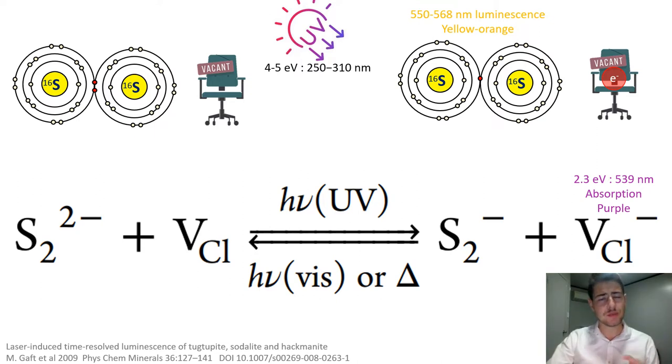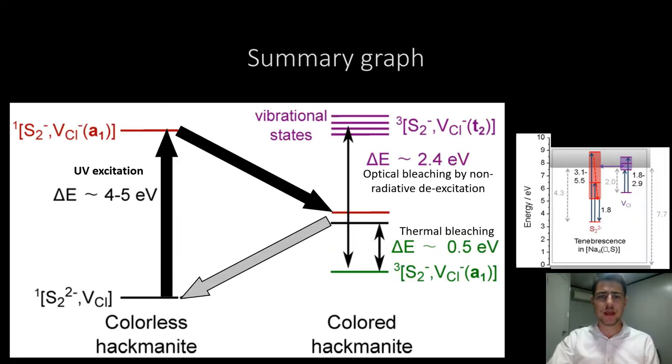If the lifetime of the electron trapped in the vacancy is long enough, an inter-system crossing occurs, leading to a quite stable state in which it can stay trapped for days. It then has quantized energy levels, causing the material to absorb light in the visible range. The trapped electron can give the purple color to that hackmanite, around 539 nanometers.